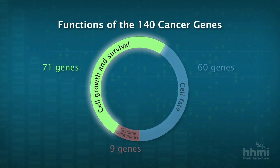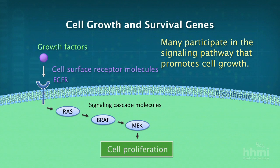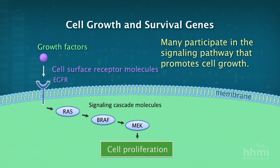Let's look at the 71 cell growth and survival genes. This is over half of the cancer genes — these are the proto-oncogenes, genes involved in signaling pathways in cells that sense signals from outside the cell and regulate the normal growth of various tissues. A classic example is the epidermal growth factor receptor, which we'll talk about in some detail in the second half of the talk.